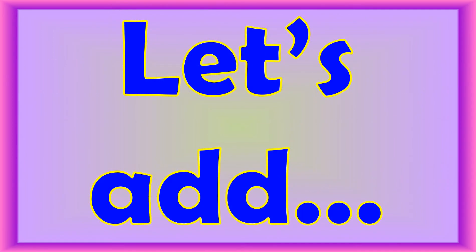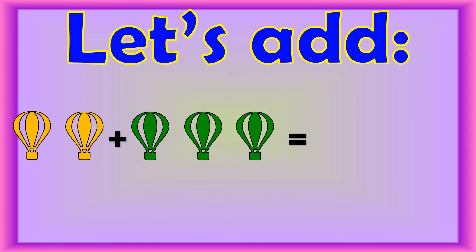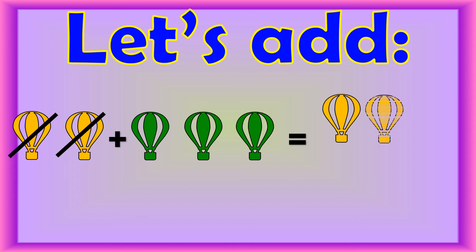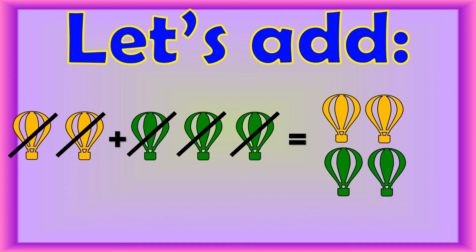Now that we know the parts of an addition number sentence, let's add. We'll count the yellow and green balloons. One, two, three, four, five.